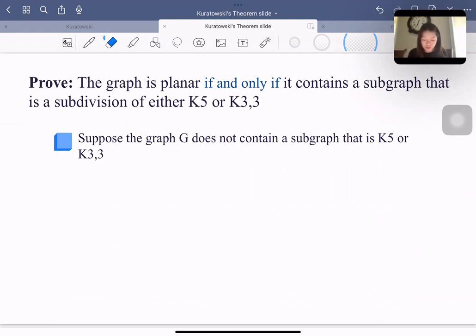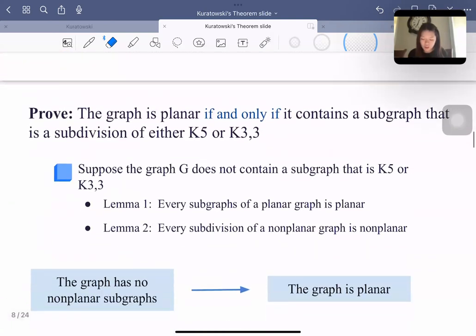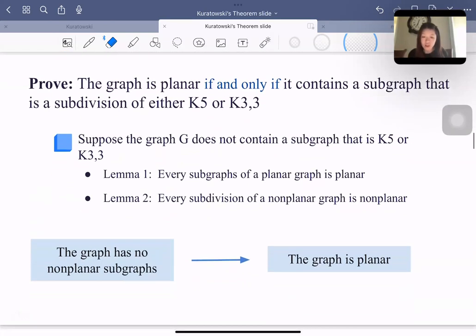we suppose the graph G does not contain a subgraph that is K5 or K3,3. So from the previous lemmas, we know that every subgraph of planar graph is planar, and every subdivision of non-planar graph is non-planar. And we already suppose G does not contain a subgraph K5 or K3,3, which means the graph has no non-planar subgraph. So it implies the graph is planar.